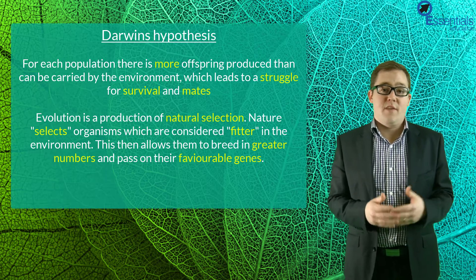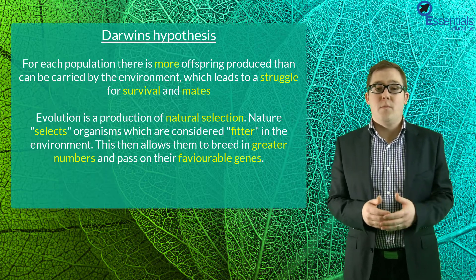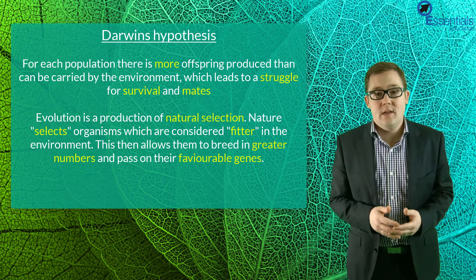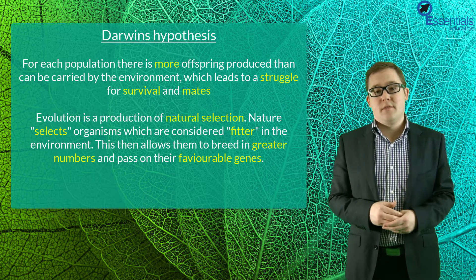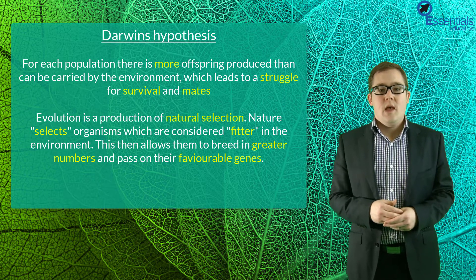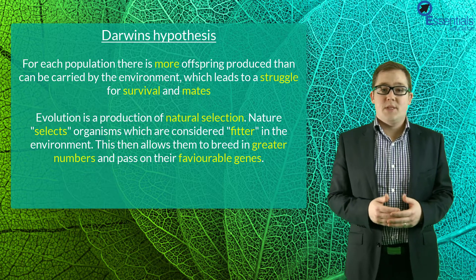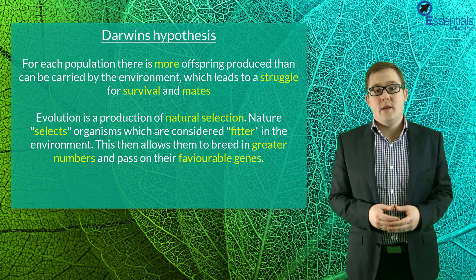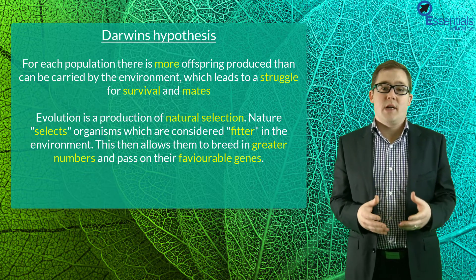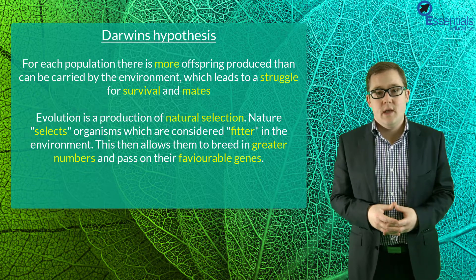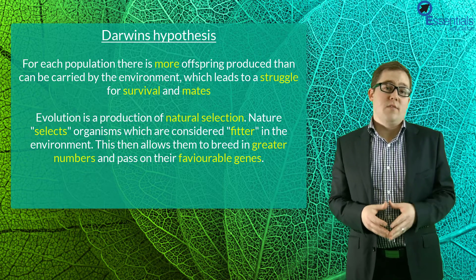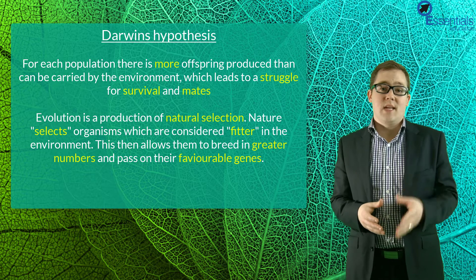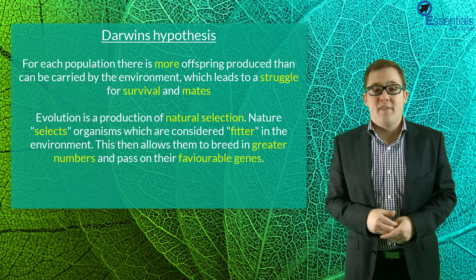During his voyage, Darwin hypothesized that for each population more individuals were born than the ecosystem could sustain, and that only a select few survived to breed and reproduce. In his book The Origin of Species, published in 1859, Darwin suggested that evolution was a product of a process called natural selection, in which nature or the environment selected those individuals who were best adapted to survive, or what he called the fittest.